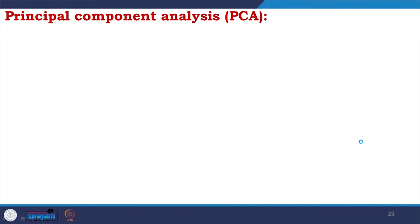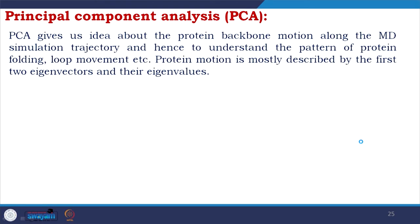Coming to principal component analysis or PCA. PCA gives us an idea about the protein backbone motion along the MD simulation trajectory and hence helps understand the pattern of protein folding, loop movement, etc. Protein motion is mostly described by the first two eigenvectors and their eigenvalues. Comparing RMSD and PCA: both calculate change, but there is a huge difference — in RMSD there is only a value, whereas in PCA you have an eigenvector, so there is a value and a direction, giving directionality to the movement.